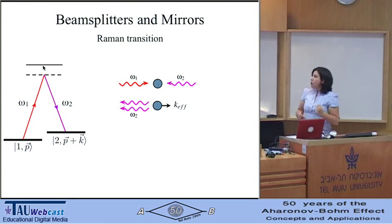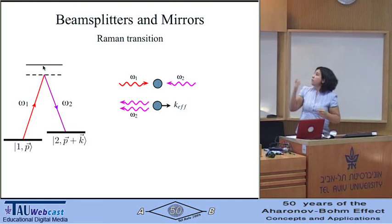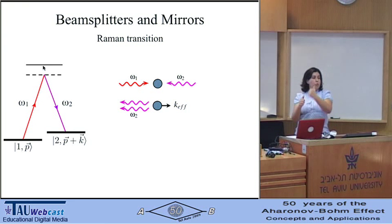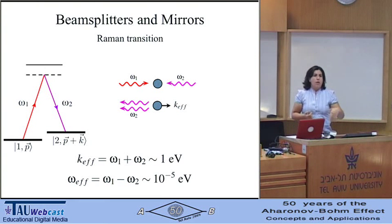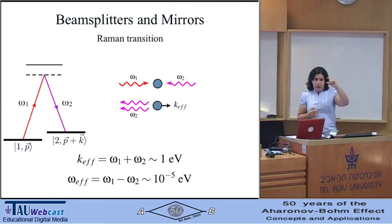During this process the atom absorbs a photon at frequency omega-1, getting a momentum kick in one direction, and because of the presence of the laser at frequency omega-2 it will stimulate-emit a photon in the other direction, getting another kick. As a result, the effective momentum the atom acquires is the sum of the momenta from the two lasers, while the internal degrees of freedom are excited by only the difference.